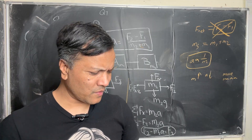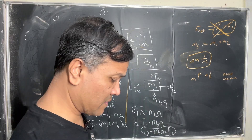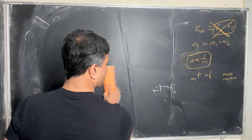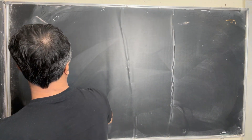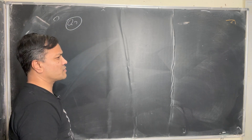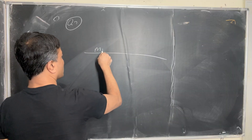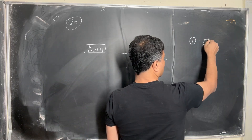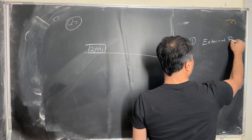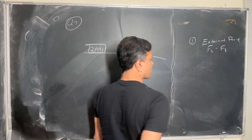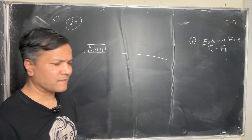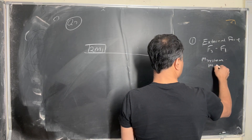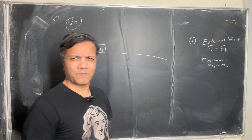So let's go to problem number two. We kind of addressed the issue before, but let's address it again. Now box M1 becomes 2M1 because I doubled the mass. From problem one, the external force was F2 minus F1. The external force will remain the same here. What will change is M_system, which was M1 plus M2.